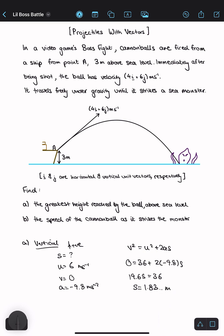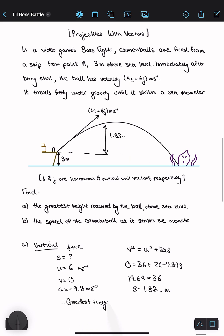This is not the greatest height yet, however. I have to add this offset of 3 meters as well. So therefore, the greatest height is equal to 3 plus 1.83 meters, which is 4.84 meters rounded to three significant figures.